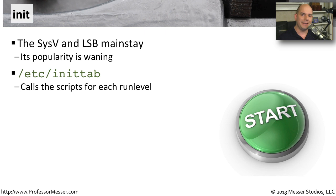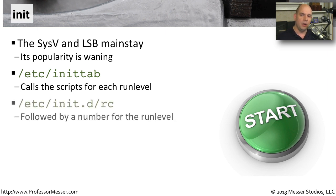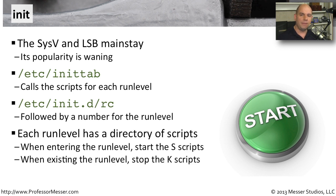The functions around init all start with a file called inittab. It's in the /etc directory and has information about what scripts are going to run for each run level you choose. So if you're going to run level 3, this points your Linux machine to run the proper scripts for run level 3; run level 5 is a completely different set of scripts. Those scripts are contained in /etc/init.d, and there is an rc script that begins all of the other scripts in the init process.